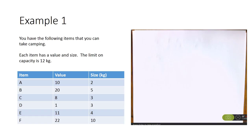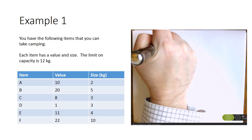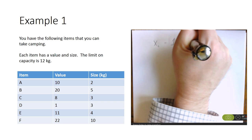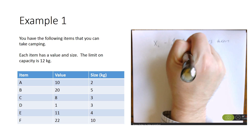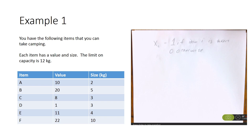Our first example has six items we might want to take on a camping trip — things like food, a tent, or a sleeping bag. Each item has a value and a size, and the total weight of items we take has to be less than 12 kilograms. Our decision variable is x sub i, which is 1 if item i is taken and 0 otherwise. We'll write the formulation without set notation for simplicity.